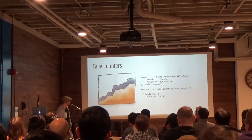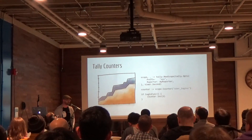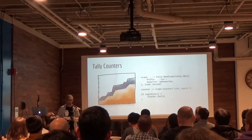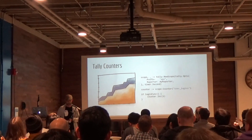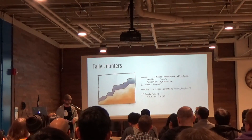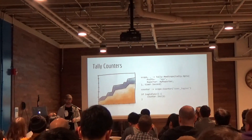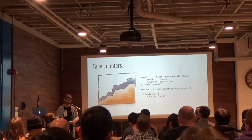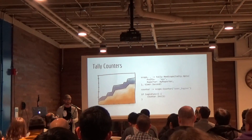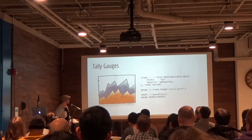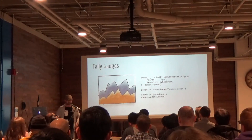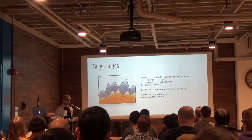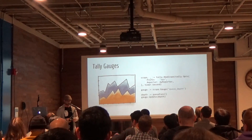Tally's metric types are counters, gauges, timers, and histograms. Counters are for reporting events that have happened — for example, logins, cache hits, and so on. A counter's value is always going up or always going down. A gauge measures a value that fluctuates over time — for example, memory utilization, the backlog of a queue, and the current number of Go routines.